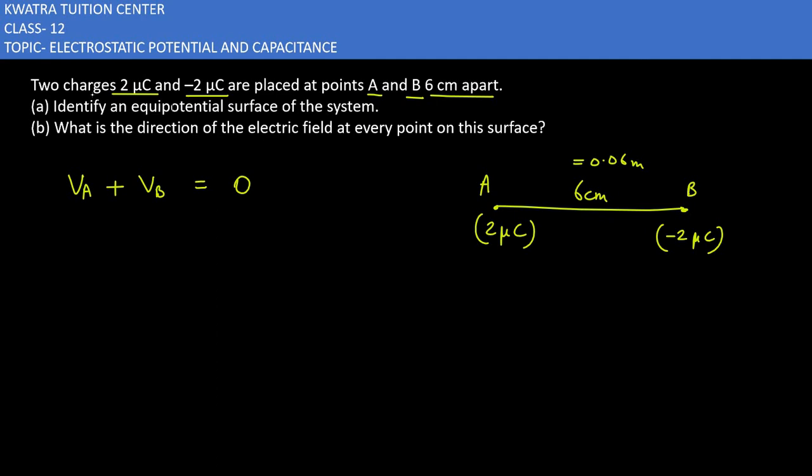Now if we use VA plus VB, we know that both have 1/(4πε₀). First we will take the charge 2 µC, so 2×10⁻⁶ divided by x, plus -2×10⁻⁶ divided by (0.06 - x) equals 0.